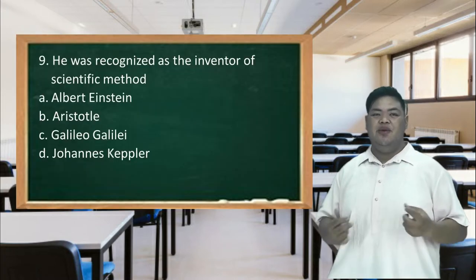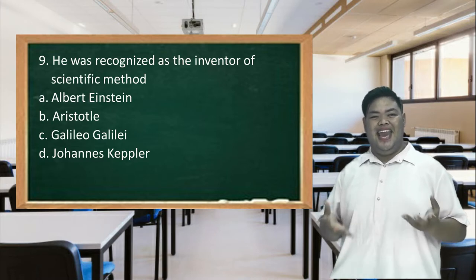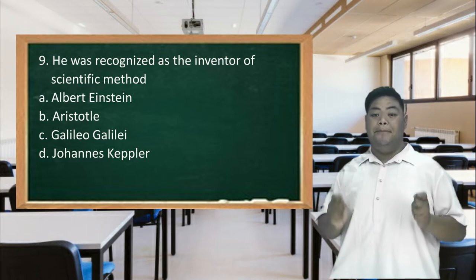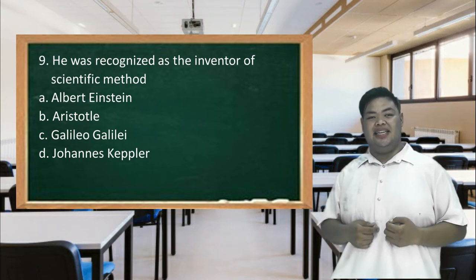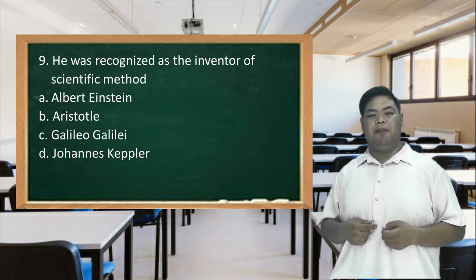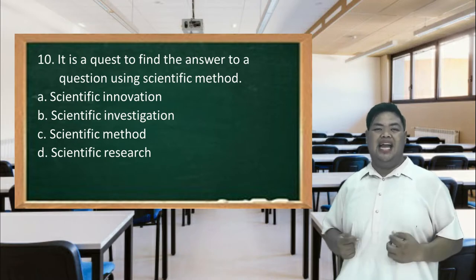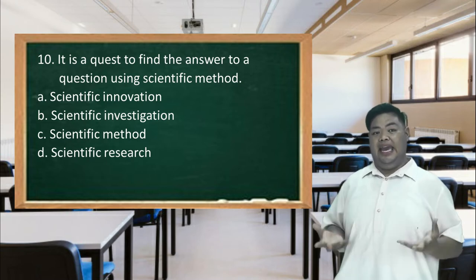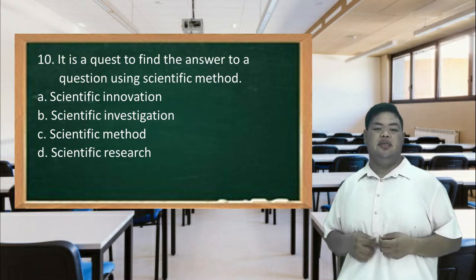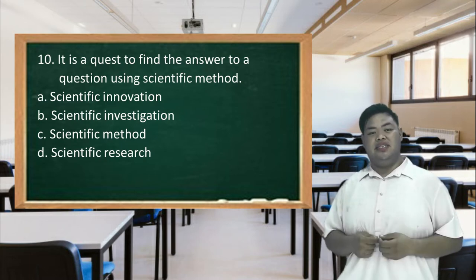Number 9. He was recognized as the inventor of scientific method. A. Albert Einstein. B. Aristotle. C. Galileo Galilei. D. Johannes Kepler. Number 10. It is a quest to find the answer to a question using scientific method. A. Scientific innovation. B. Scientific investigation. C. Scientific method. D. Research.